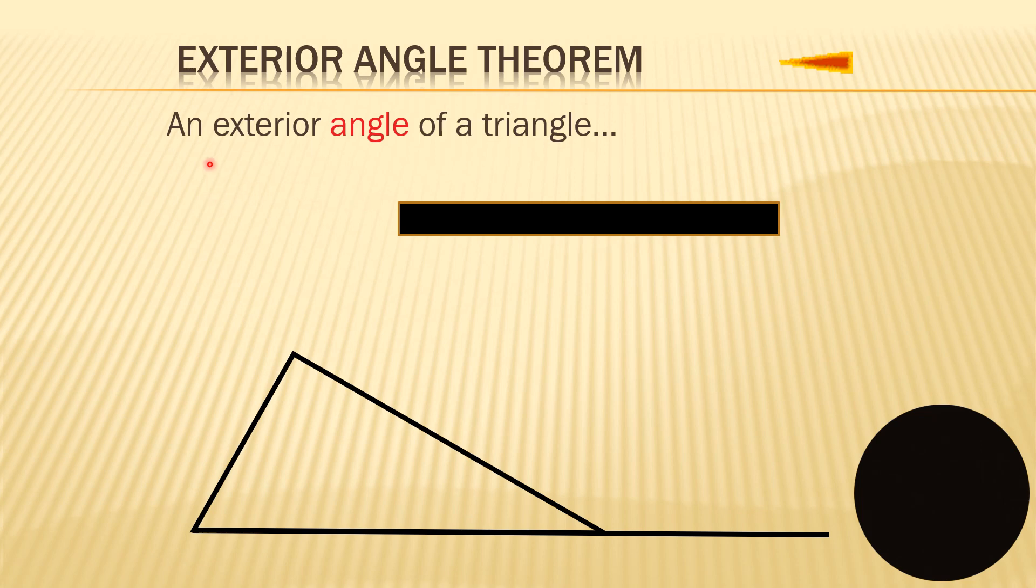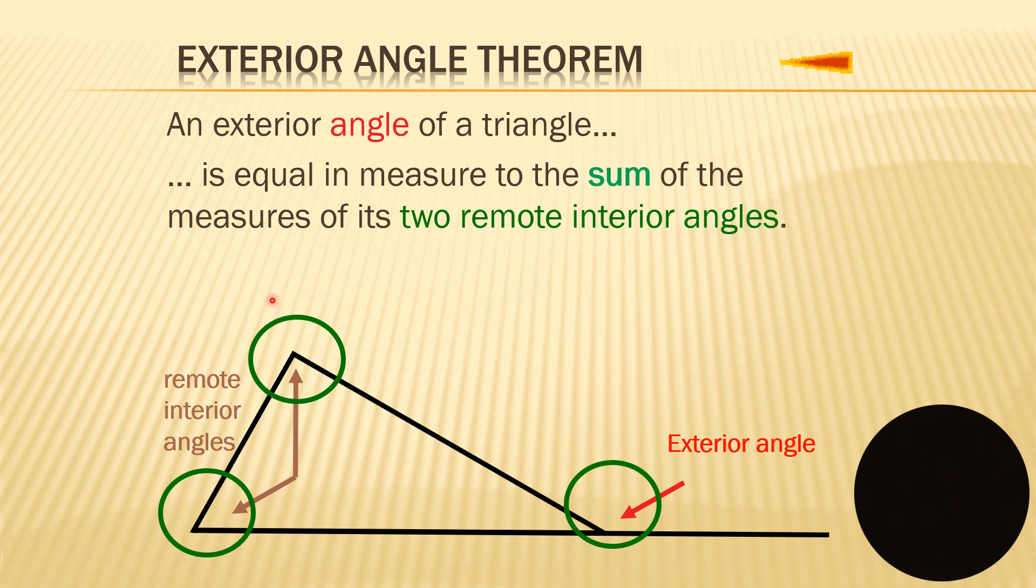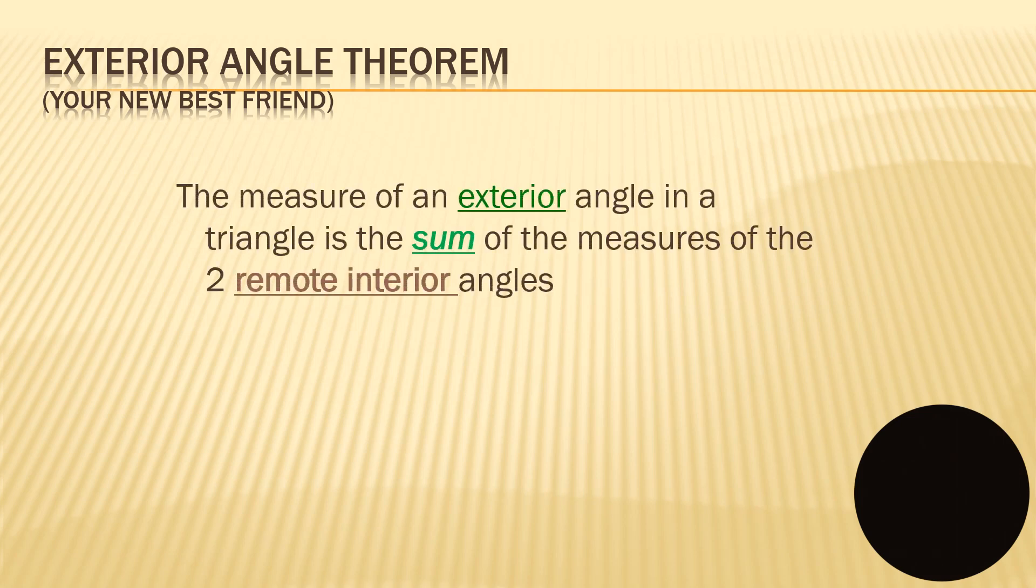Exterior angle theorem: an exterior angle of a triangle is equal in measure to the sum of the measure of its two remote interior angles. So, as you can see here, we have the remote interior angles, and this is the exterior angle.